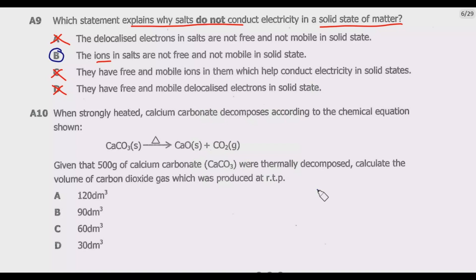Question A10: When strongly heated, calcium carbonate decomposes according to the chemical equation shown. CaCO₃ → CaO + CO₂. Given that 500 grams of calcium carbonate were thermally decomposed, calculate the volume of carbon dioxide gas produced at RTP. So we are looking for the volume of carbon dioxide produced. The first thing is we need to check whether this equation is chemically balanced. We have one calcium, then one calcium balanced. One carbon, then one carbon balanced. Three oxygen, then one plus two which is three. So this is chemically balanced.